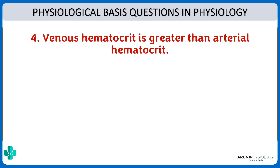Next: why is venous hematocrit greater than arterial hematocrit? If you take blood from an artery and a vein and compare their packed cell volume, you will find that the venous hematocrit is at least 3% more than the arterial hematocrit — in other words, the volume of venous RBCs is greater than that of arterial RBCs. The reason is chloride shift.